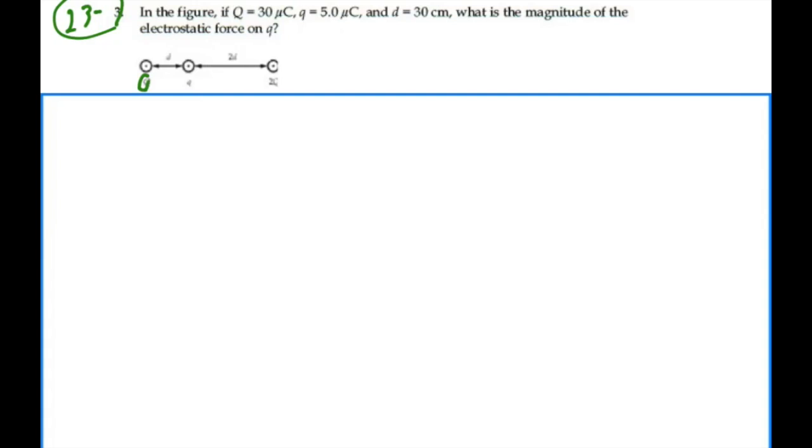So we have a q here, but we have a 2q over here, and then little q is in the middle. We have a distance d, which is 30 centimeters, so we say this distance is 0.3 meters. Then we have a 2d over here, so that's 0.6 meters.